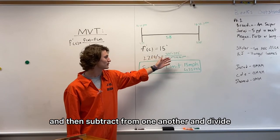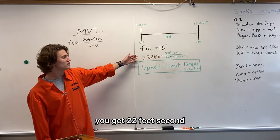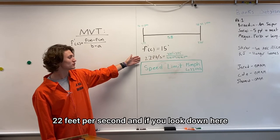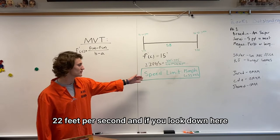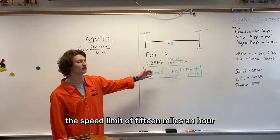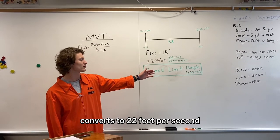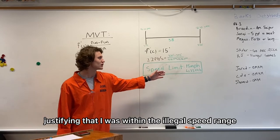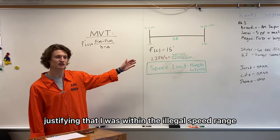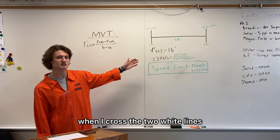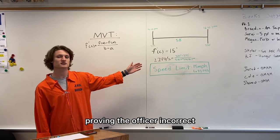Below that we plug in time and then subtract from one another and divide. Once you divide you get 22 feet per second. And if you look down here at this conversion, the speed limit of 15 miles an hour converts to 22 feet per second, justifying that I was within the illegal speed range when I crossed the two white lines, proving the officer incorrect.